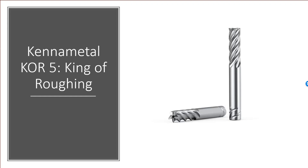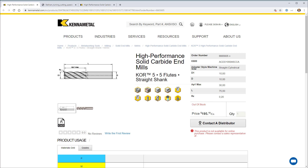This is Kennametal's KOR5 — the KOR stands for King of Roughing. It reminds me of the old Shelby Mustang KR, where KR stood for King of the Road. It's been featured by a couple of popular blogs recently as the ultimate rougher. A 10-millimeter diameter without the fancy shank grooves goes for almost $200 — listed at $195.10. These are not cheap.